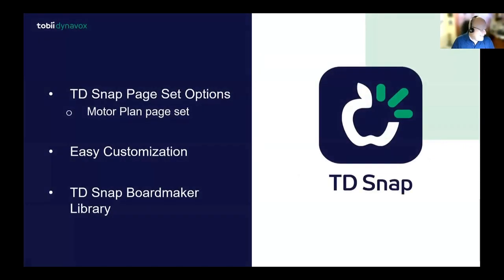All of these page sets are a part of TD Snap — you choose the one that supports you the most. We have several offerings for symbol users, text-based users, and then a group for aphasia and one specific for scanning. All of these page set options are included in your TD Snap software, and a few are available through in-app purchases, but even those are available for 60-day trials.